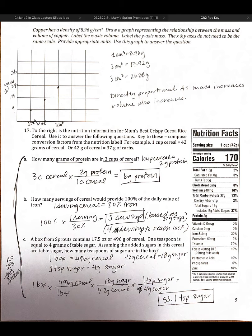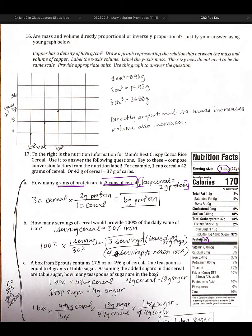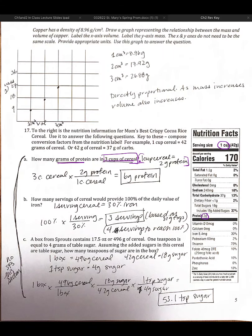For example, if we look at A, it asks us how many grams of protein are in three cups of cereal. So I looked over here and I saw that one cup of cereal is equal to two grams of protein, and I wrote that down as my conversion factor. And then that's what I used with three cups being my given.